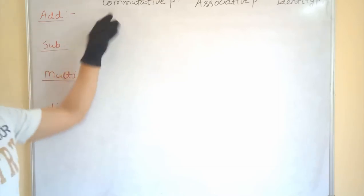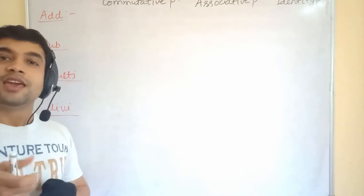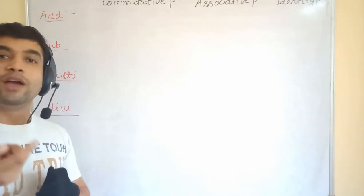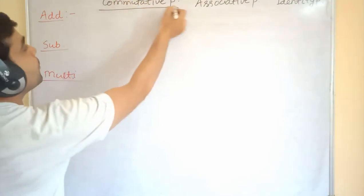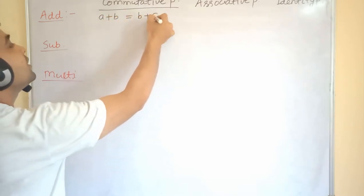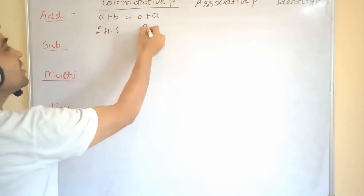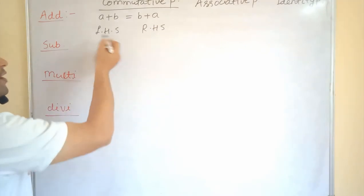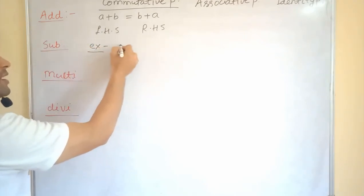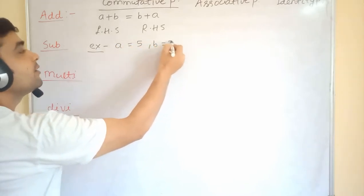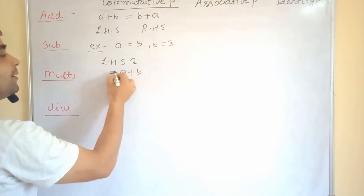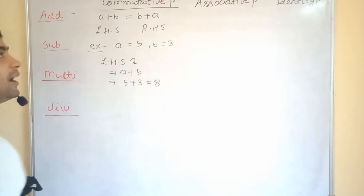In addition, if I talk about commutative property — the meaning of commutative is: if you reverse any numbers over the operation addition, the value will not change. According to commutative property for addition, if a + b = b + a, this is the LHS and this is the RHS. Let's check by example: a = 5 and b = 3. LHS is a + b = 5 + 3 = 8.